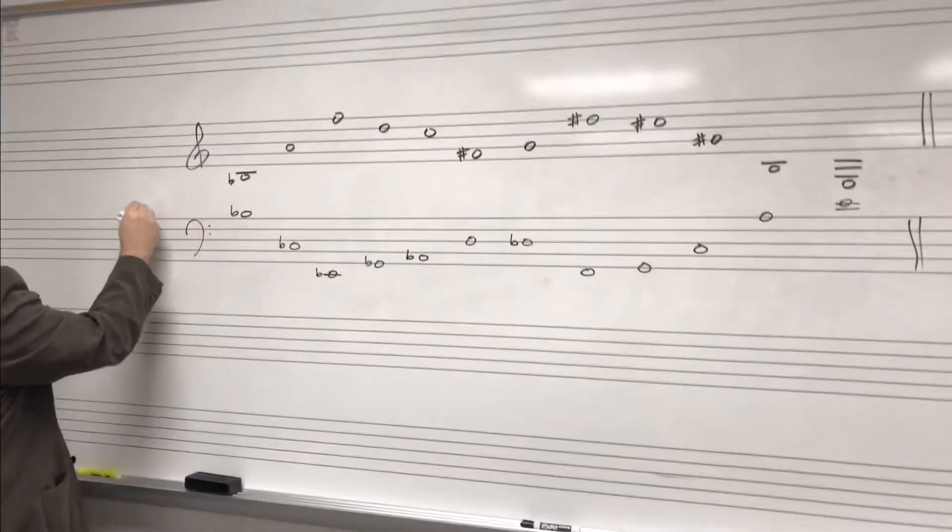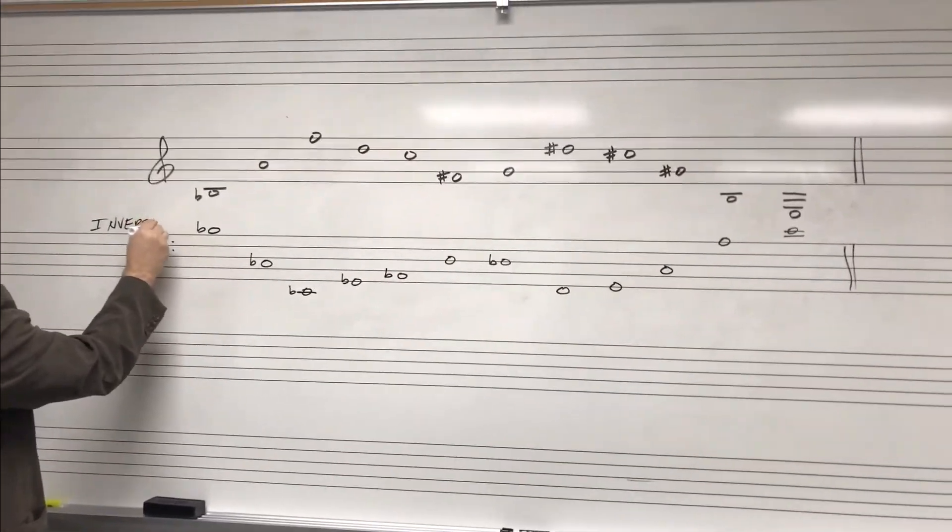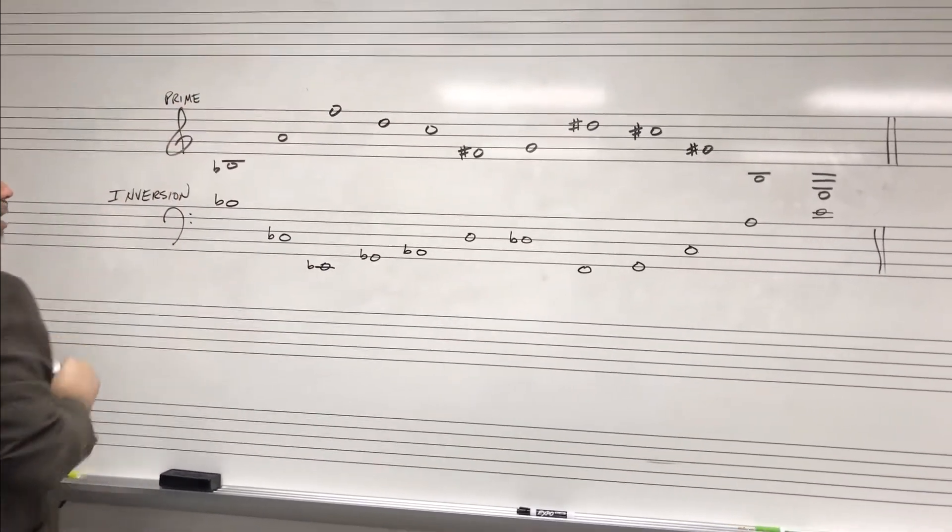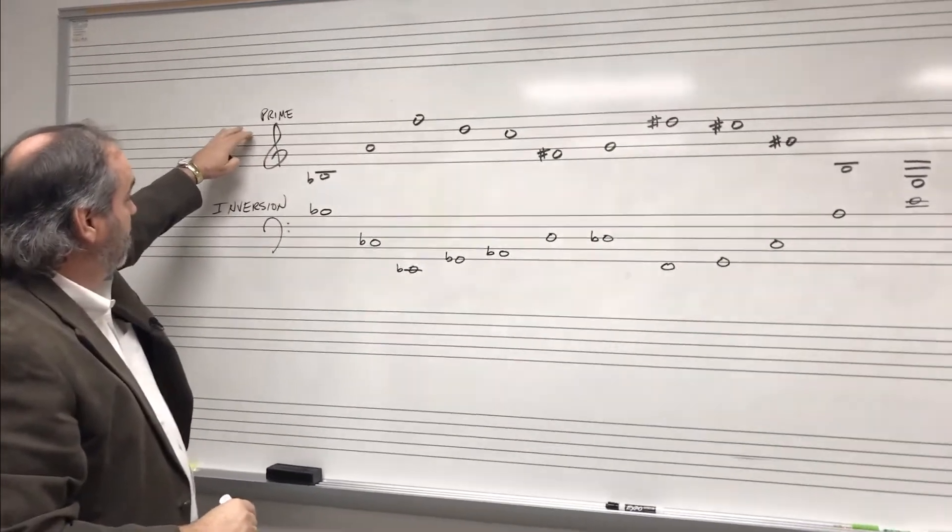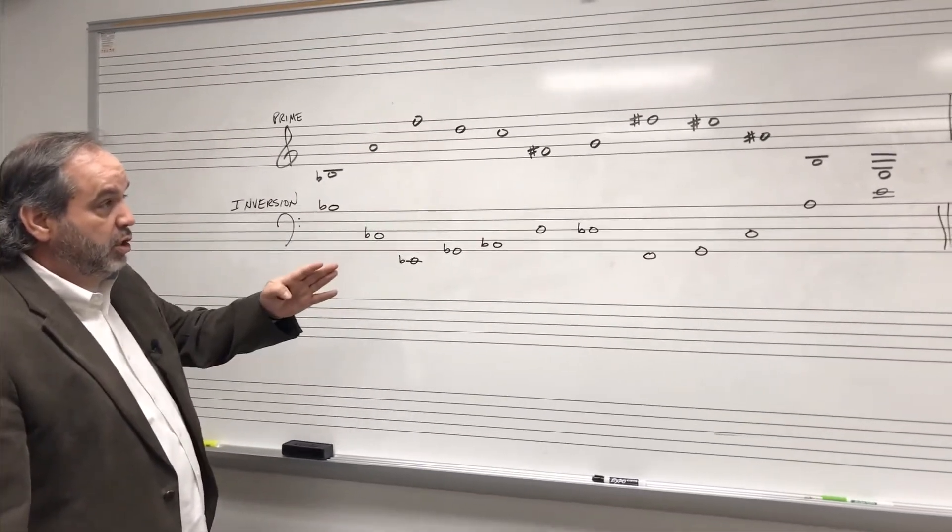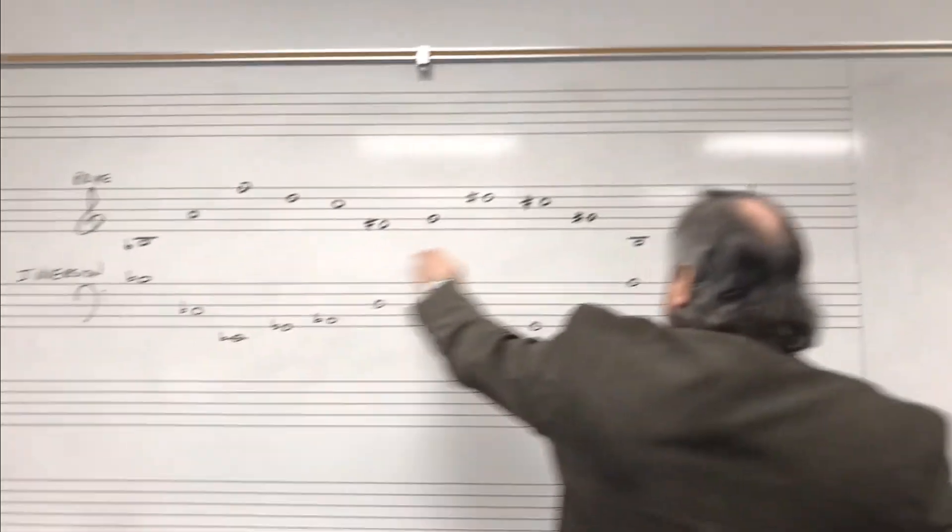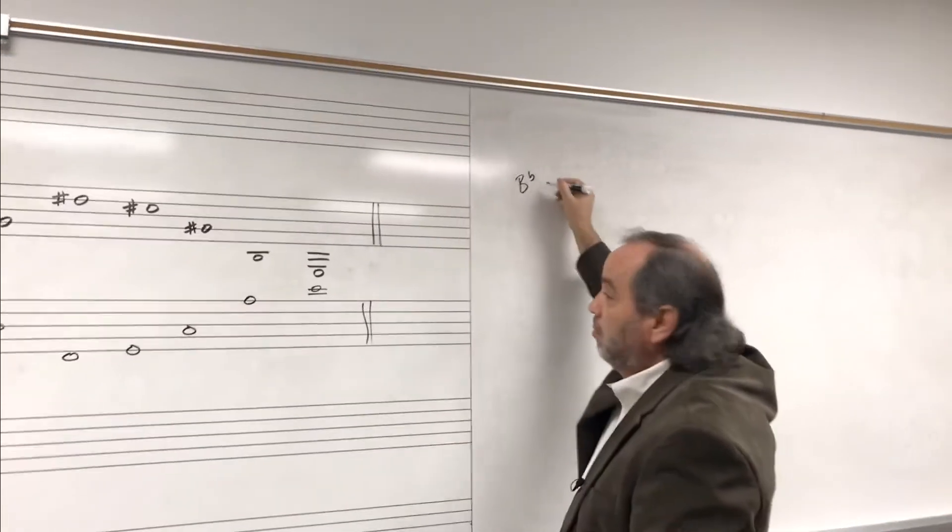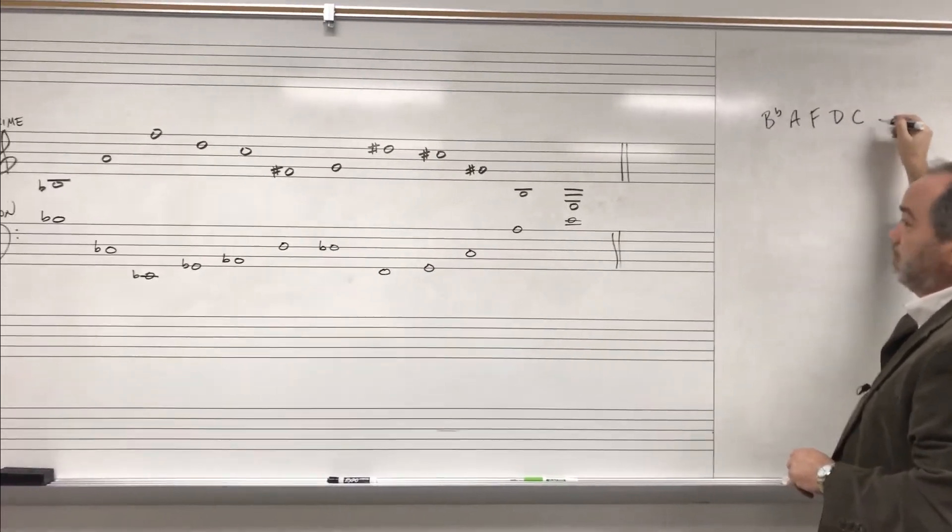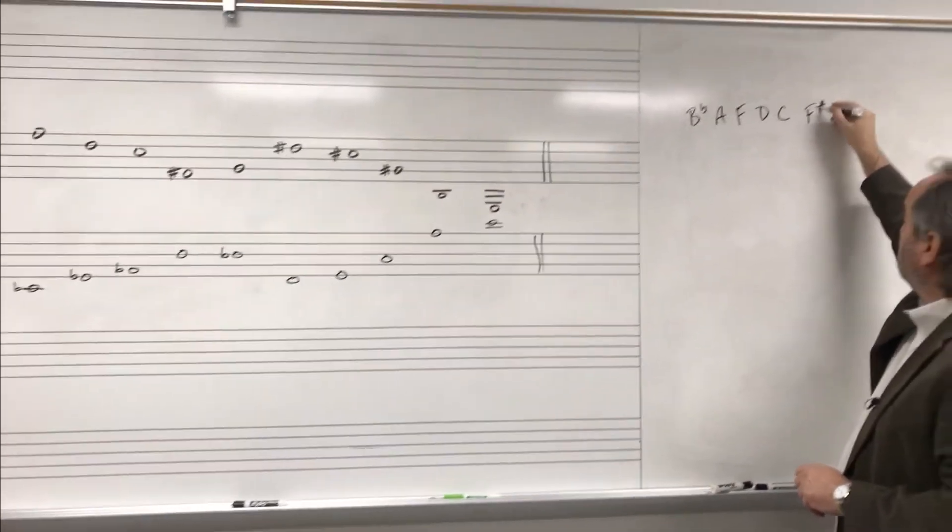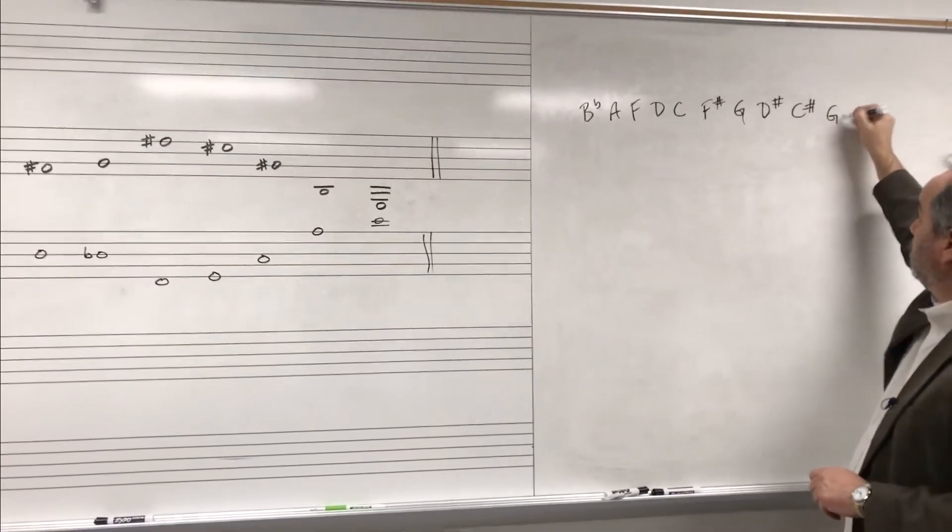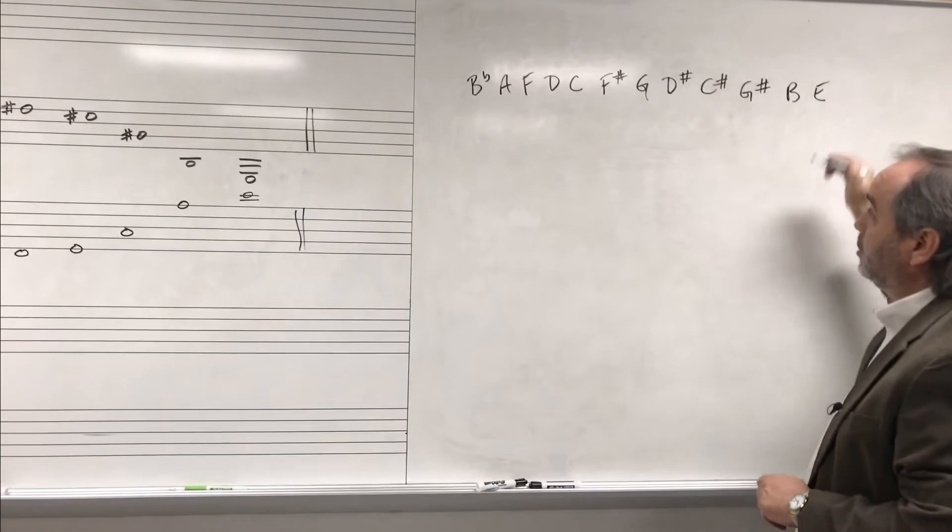And by doing this, I have created a mirror image of the original. And so this is going to be called the inversion. This initial form of the row is called prime. And we have the prime form and the inversion of the row. But we also have other manipulations of the row, which I can show you over here. So if we take the prime form of the row and write it out: B-flat, A, F, D, C, F-sharp, G, D-sharp, C-sharp, G-sharp, B, and E, that gives us 12 notes.